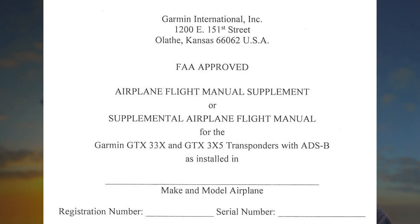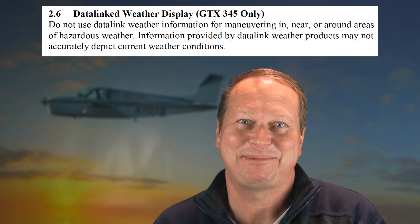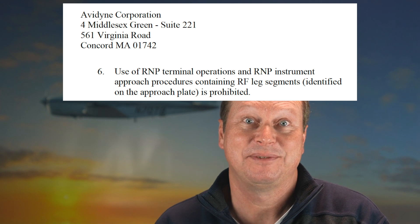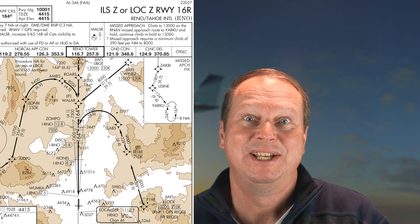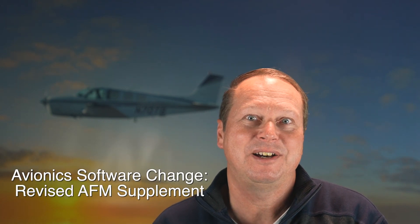These limitations can be more or less stringent than the original ones. For example, adding ice protection may relax the restriction which prohibits flight into known icing. Here's one for the Garmin GTX 345, a transponder with ADS-B in and out — the limitation says you cannot use datalink weather for maneuvering in hazardous weather. Here's the AFMS for the Avidyne IFD in my Bonanza: I'm not allowed to use approaches with RF legs — those are curved paths like DME arcs, part of some newer RNAV GPS procedures. This limitation could change with a future software revision, and the new software would come with a revised AFMS spelling out what I can and cannot do.